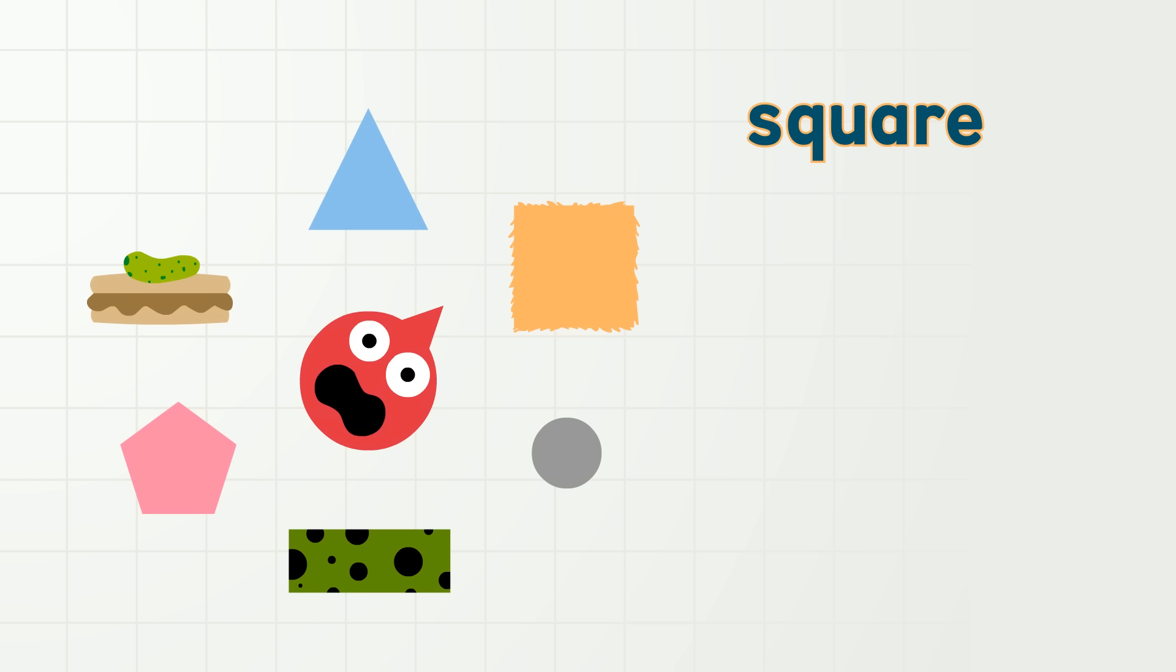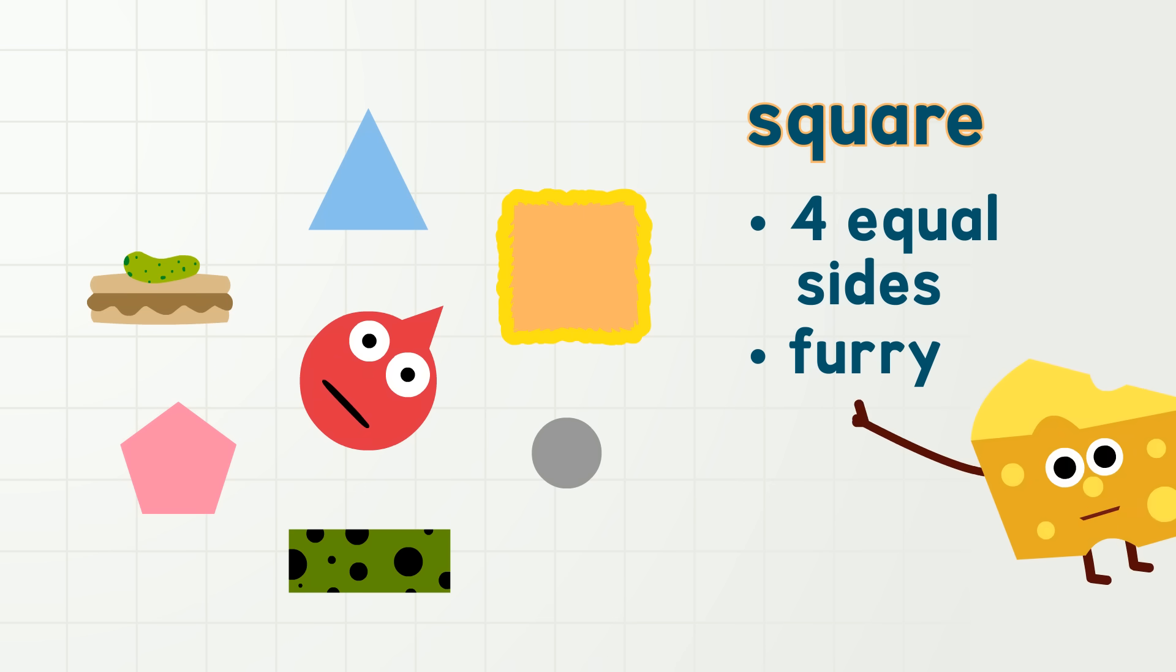A square has four sides the same length. One, two, three, four. And is kind of furry. Attributes!